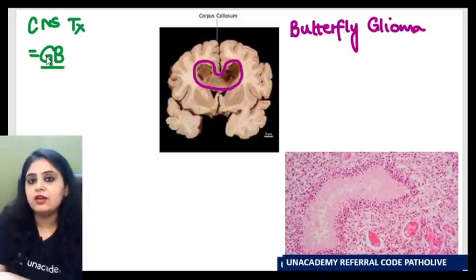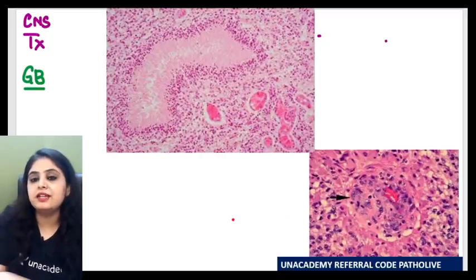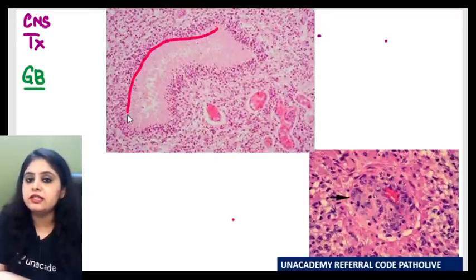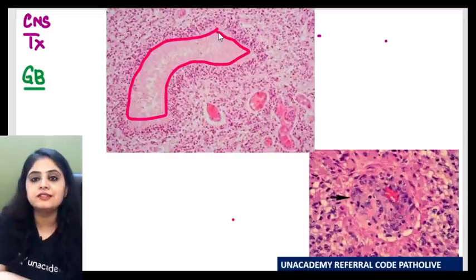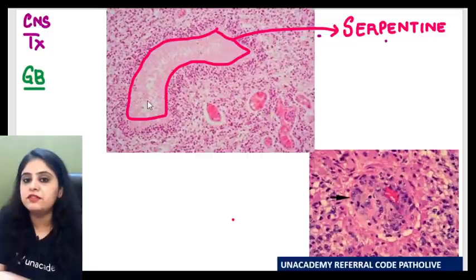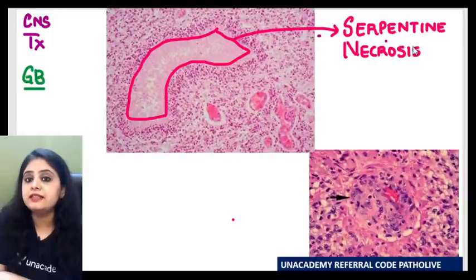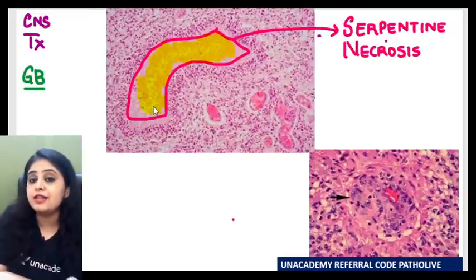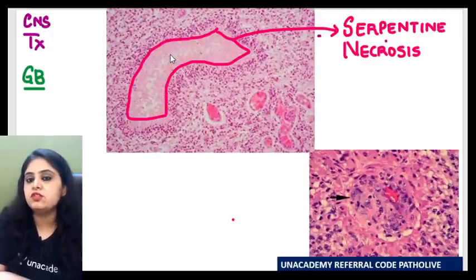Now, taking glioblastoma — butterfly glioma — when I take histopathology slides and see it under the microscope, I can show you the microscopic features. Over here you see an area which is entirely pink and a little wavy, just like a snake. What kind of necrosis do you call it? You use the word serpentine — because of this waviness. I call it necrosis because there are no nuclei, no features of living cells inside this pinkish area. It's cell death. So number one feature: serpentine necrosis.